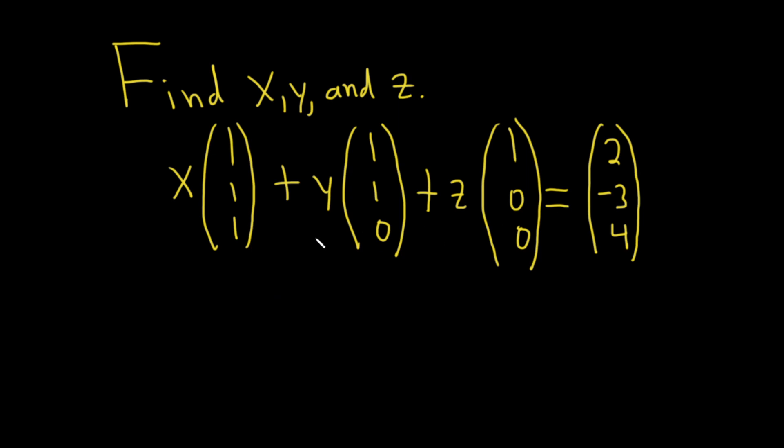So we have an equation with vectors. These are called column vectors because they're written in column form rather than row form. We have x times a vector plus y times a vector plus z times a vector equals this vector over here.